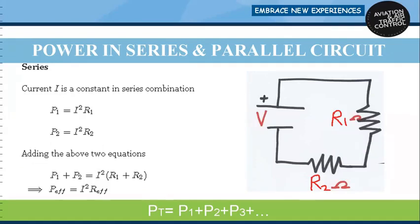Whether using a series circuit or a parallel circuit, power will be additive. Total power will be the sum of individual power across each component. We will first calculate for series, then for parallel, and verify that power in both series and parallel circuits is always additive.